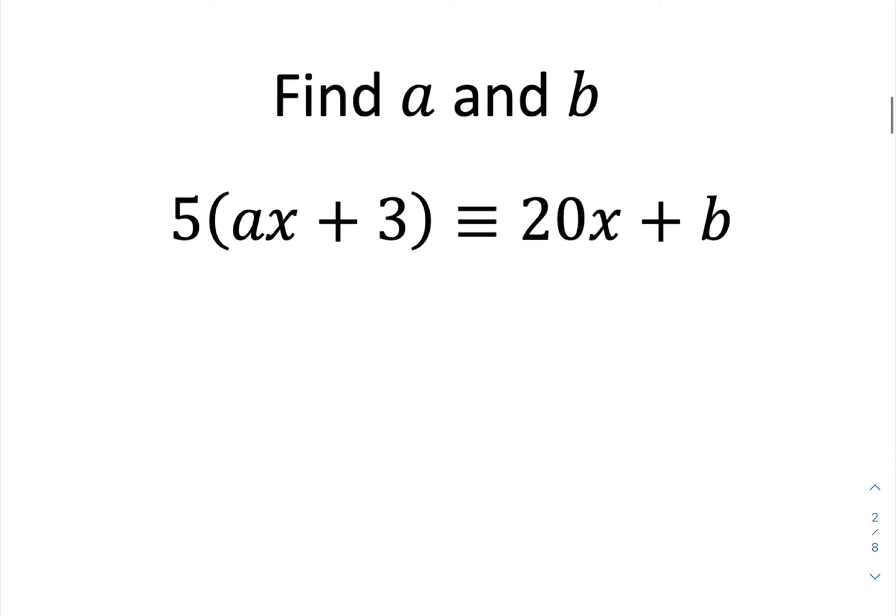So now we're going to look at another identity, but this time there will be some missing items which we need to figure out. You can see you've got missing values here for a and b. You might be able to figure this out by just looking at it, but I'm going to go through the working out because I think that sets us up nicely for the later problems.